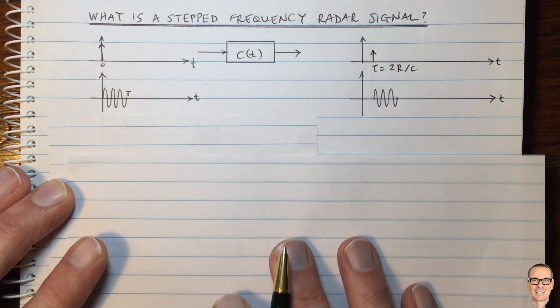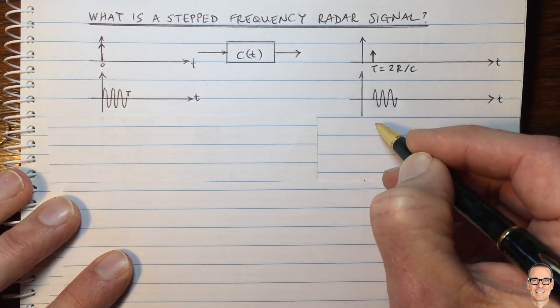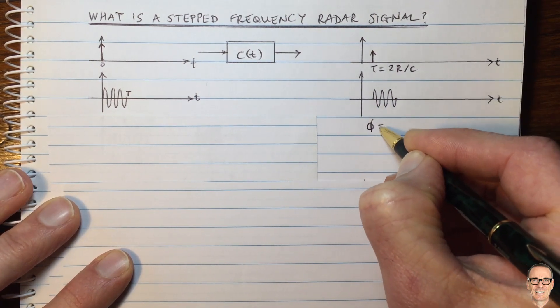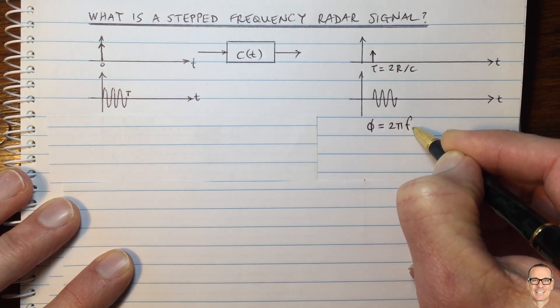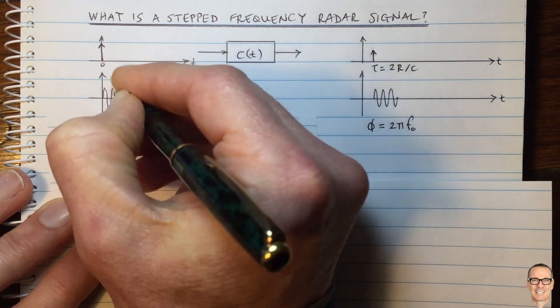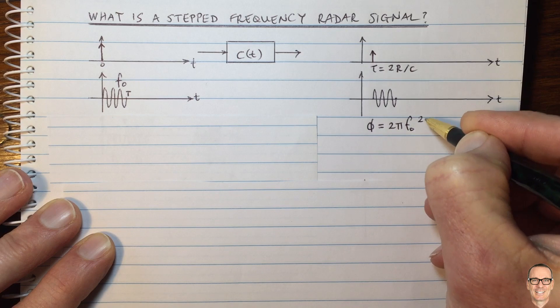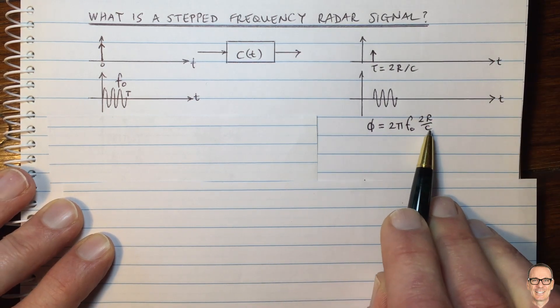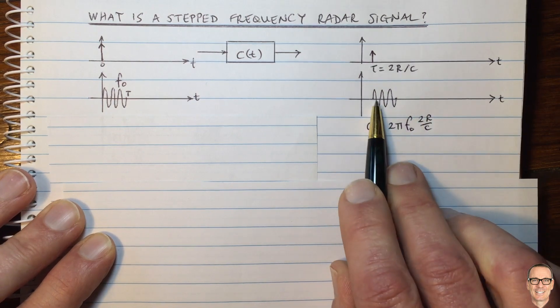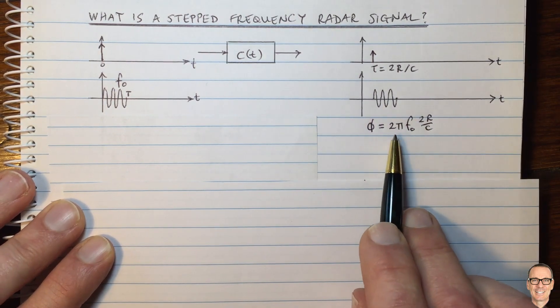And this phase is given by a relationship to that delay. The phase will equal 2π F0, where this signal is sent at frequency F0, times that delay 2R divided by C. And this is the phase of the returning signal that's come off one reflector.